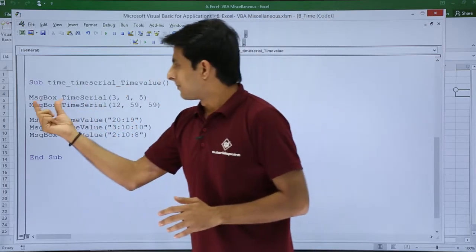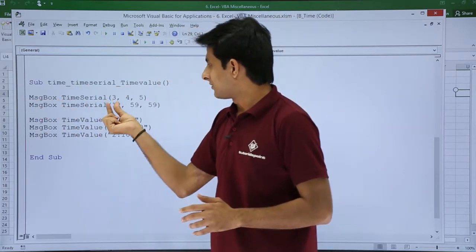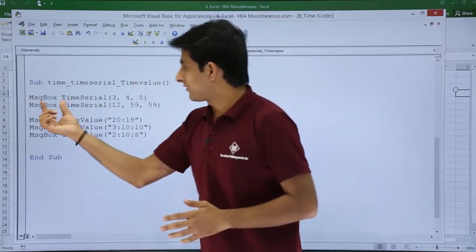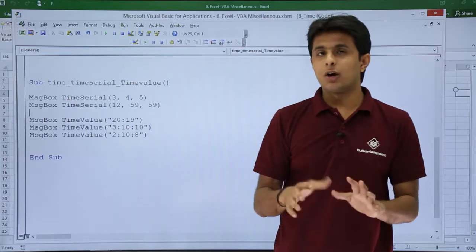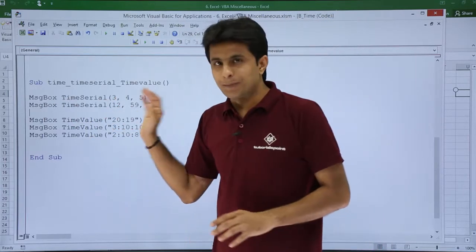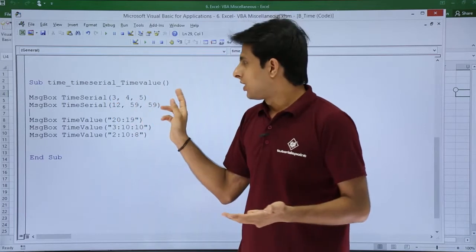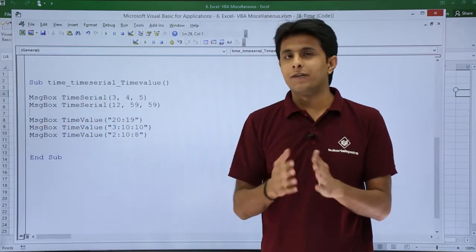Now, sub procedure time_timeserial_and_timevalue. I've written here MsgBox TimeSerial(3, 4, 5). I have purposely written here 3 stands for number of hours, 4 for minutes, and 5 for seconds. So what TimeSerial will do is it will give you in a proper format.